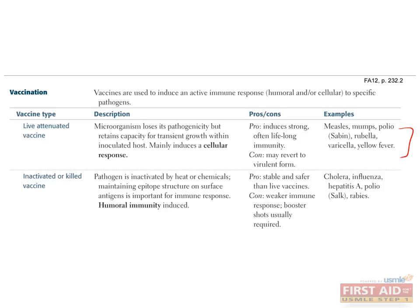Inactivated or killed vaccines make use of viral particles that have been rendered non-infectious through exposure to heat or chemicals, though they can still induce an active immune response because epitopes remain intact. Killed vaccines are more stable than live vaccines, but usually require booster shots. Cholera, flu, hepatitis A, the Salk polio vaccine, and the rabies vaccine are all examples. Killed vaccines induce humoral immunity.